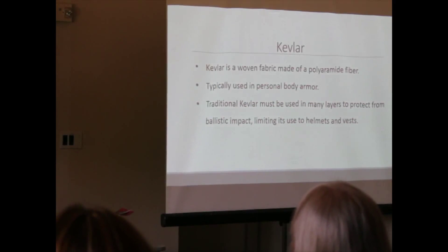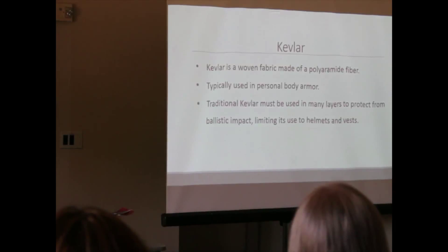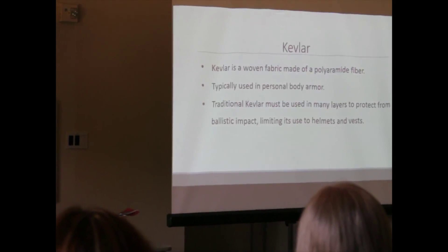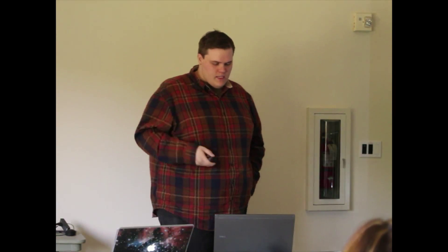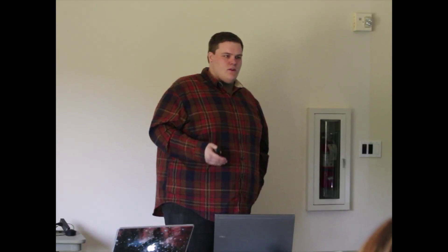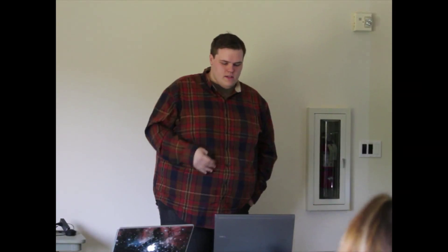So just real quick, Kevlar, it's a fabric made of woven polyamide fibers. It's a really tight weave. They use it a lot in body armor. They use it in bulletproof helmets and stuff like that. Traditionally, it's used in many layers, and that's how they get their effects. They use around 20 or so layers of woven Kevlar, followed by some additional layers of unwoven Kevlar and ballistic nylon.